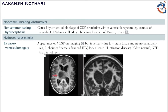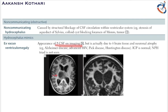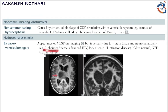There is another type called a hydrocephalus mimic: ex vacuo ventriculomegaly, which appears like hydrocephalus but is not. There is an increase in CSF on imaging, but it is due to a decrease in brain tissue rather than any blockage or reabsorption defect — specifically, neuronal atrophy. This is usually present in dementia-related diseases such as Alzheimer's disease, advanced HIV, Pick's disease, and Huntington's disease.